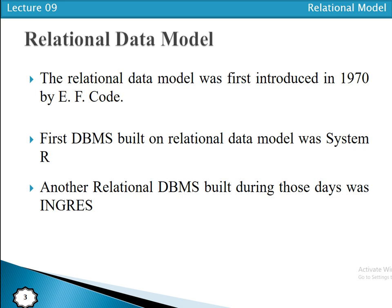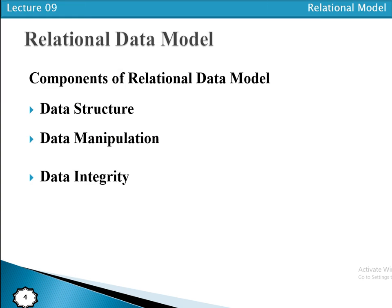The relational data model is related to logical database design. It was first introduced by Dr. E.F. Codd in 1970. The very first DBMS built on the relational data model was System R. Another DBMS based on the relational data model was Ingres. In the relational data model, data is represented in the form of tables, and the model is based on mathematical relations. It has three main components.